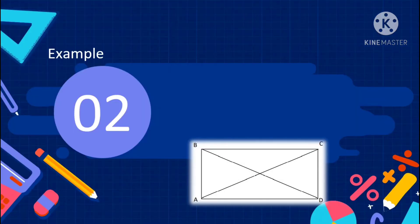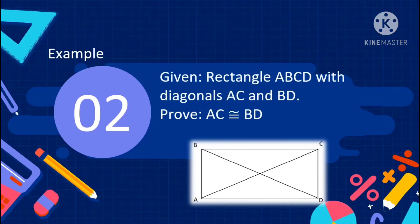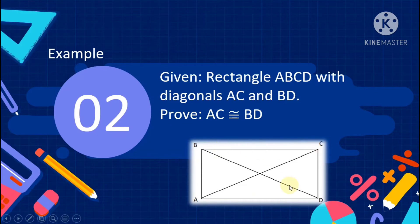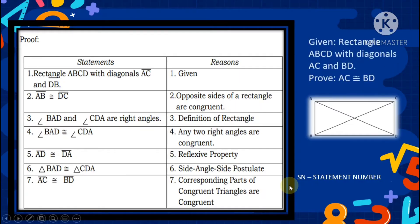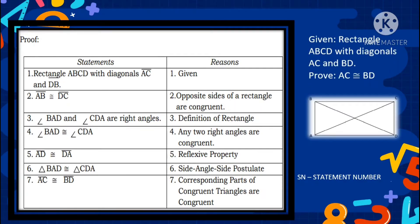Proceeding to Example number 2: given rectangle A, B, C, D with diagonals AC and BD, prove that AC is congruent to BD. We need to prove that diagonal AC is congruent to diagonal BD. Here is the illustration.